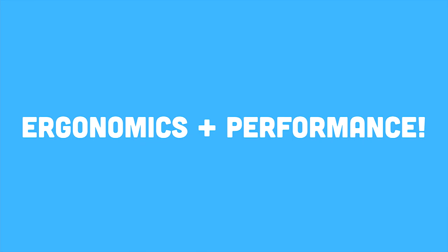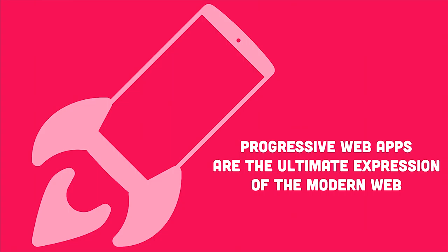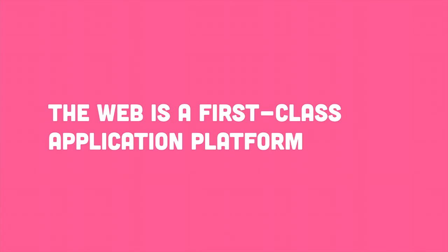I want to take a moment to think about the web platform — it's come really far, and that's the theme you're hearing again and again today. We now have progressive web apps. With Service Worker, you're able to build applications resilient to flaky networks, that can send push notifications, and that can launch from the home screen without a browser chrome around them. Features like Service Worker and Web App Manifest truly make the web a first-class application platform.